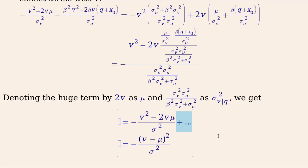We're done. That's how you do it. That's how you find the conditional expectation of V conditional on Q if you are being rigorous and really want to understand how it's derived.